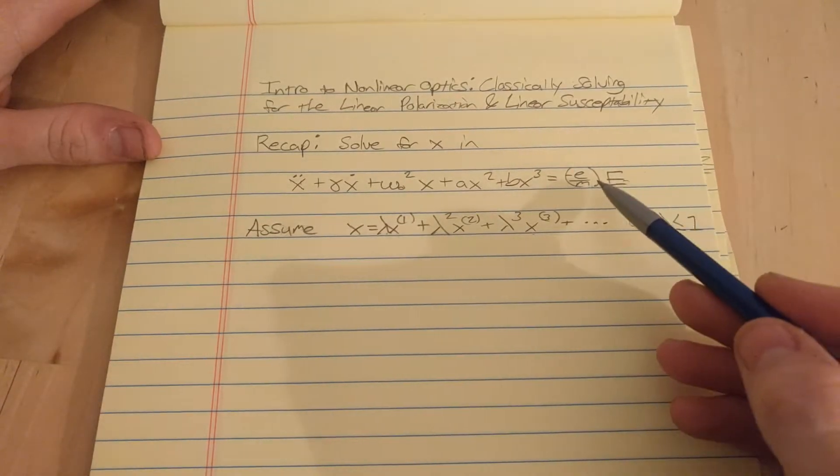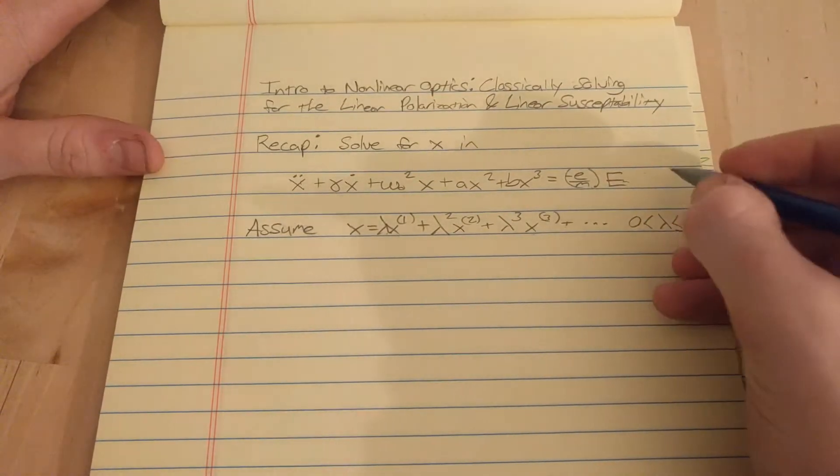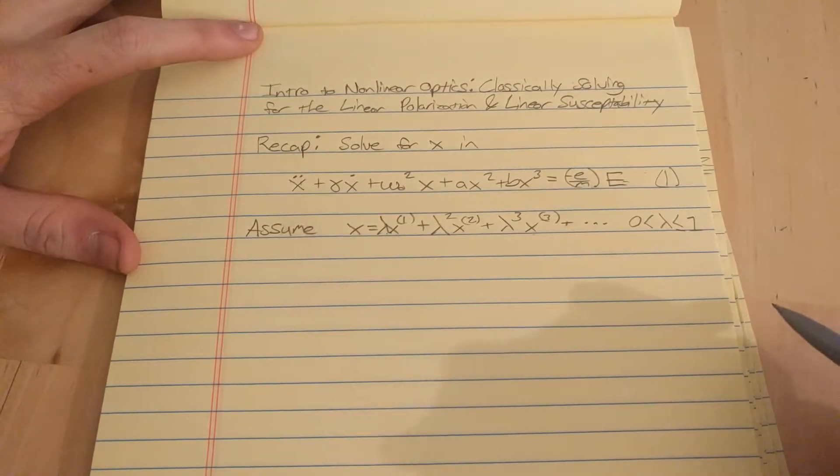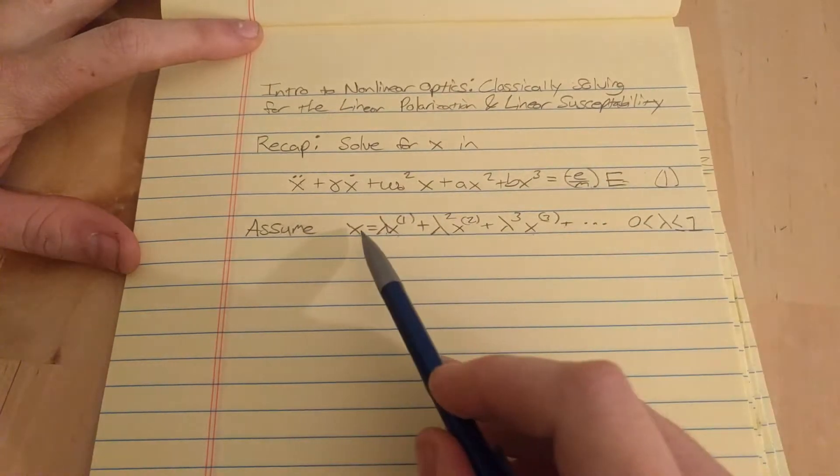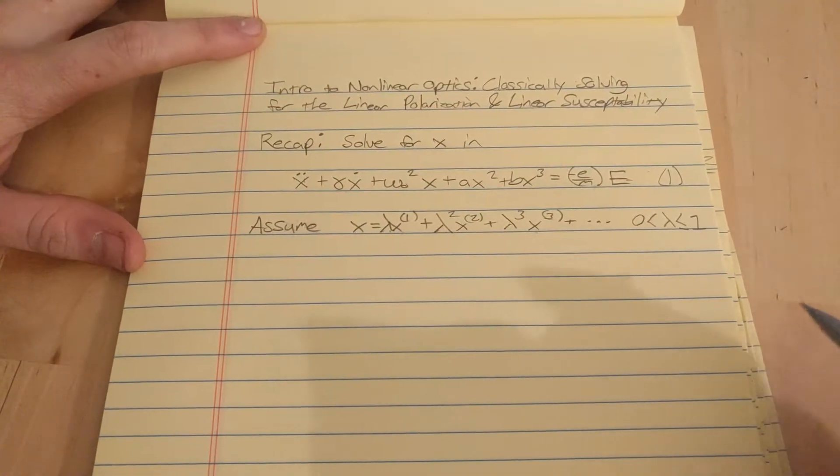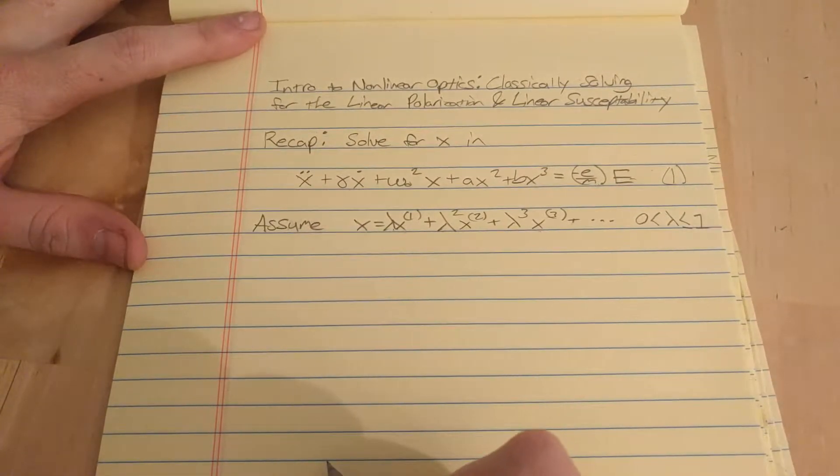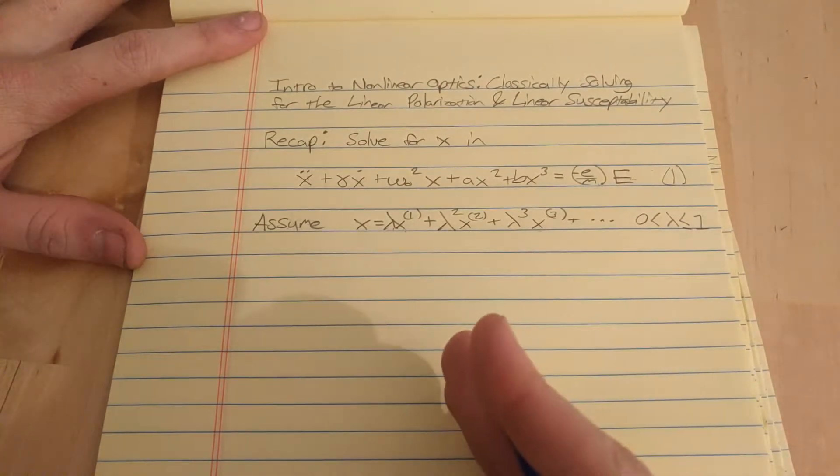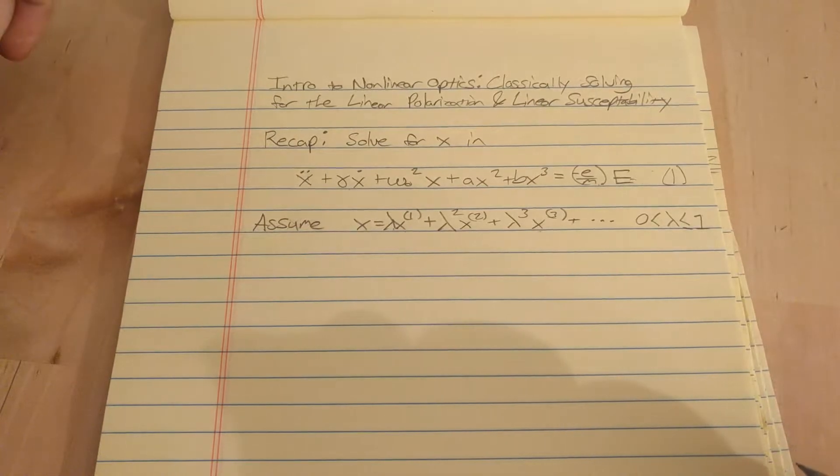So what we do is we multiply the right-hand side of this equation here. I'm going to call this equation 1 to make things easy. So we multiply the right-hand side by lambda, and we plug in this x, and because of the condition that the coefficients in front of a variable, if that variable is on the left and the right side, those coefficients have to be equal.